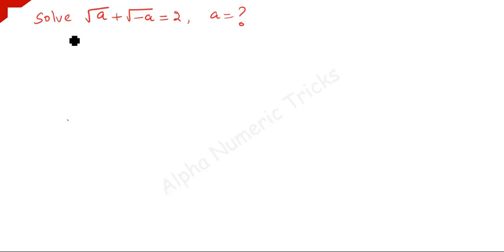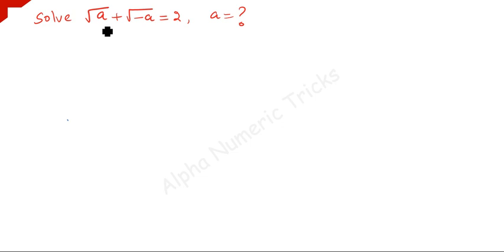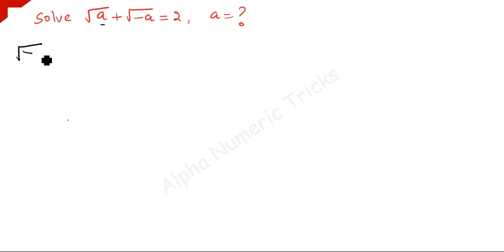We are going to solve this nice olympiad problem. We have to solve: square root of a plus square root of negative a equals 2, and we have to find out the value of a. What we have to do is keep the square root of negative a to one side.